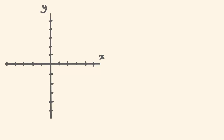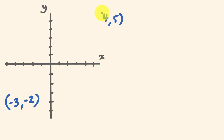So say you had two points on a linear equation or two points on a Cartesian plane. The first one we're going to put out is minus 3, minus 2. And we're going to have another point at 4, 5. So we'll plot those first, and then what we're going to be doing is we're going to try and find the middle point between these.